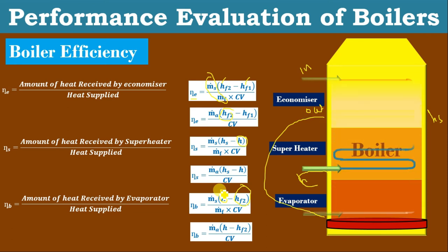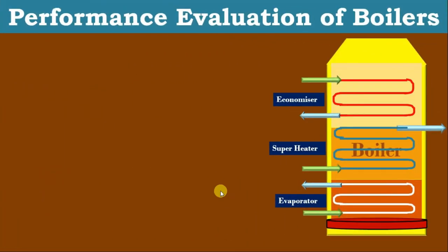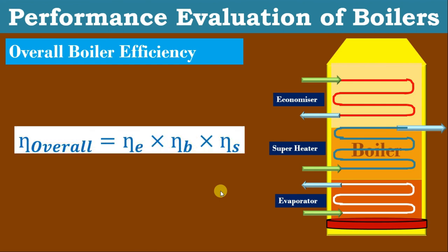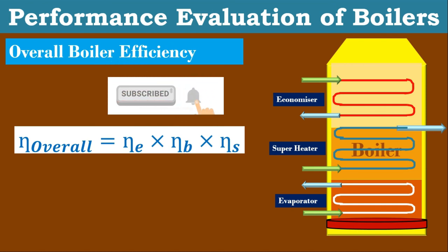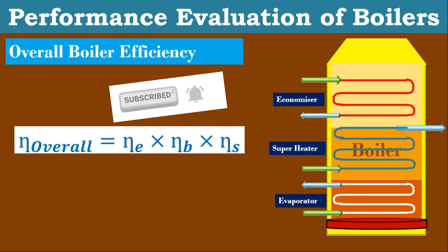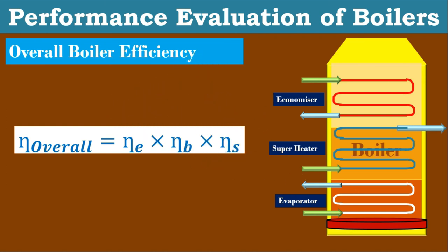If we need to find out the overall efficiency of the boiler, then the efficiency of the boiler, efficiency of the economizer, and efficiency of the superheater — if we multiply these three, we will get the overall efficiency of the boiler. We will also discuss the parameters required to find out the efficiency of the boiler in the direct method, and similarly the merits and demerits of the direct method.